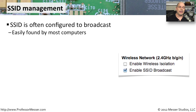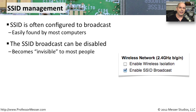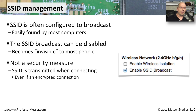One advantage of a visible SSID is that devices can easily find and connect to your wireless network. But sometimes you don't want your network to appear in that list, so you can make the SSID invisible by disabling the broadcast in your access point settings. Keep in mind this is not a security measure — freely available tools can still reveal your SSID easily. You still need encryption and authentication methods in place whether or not you're broadcasting the SSID.